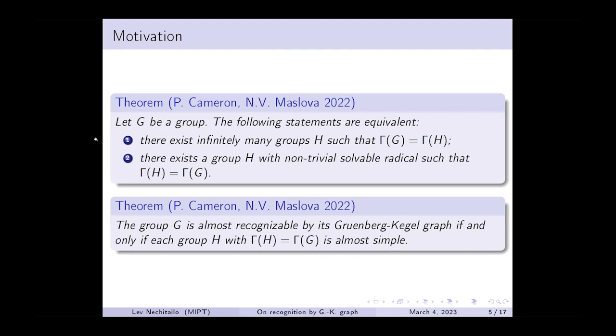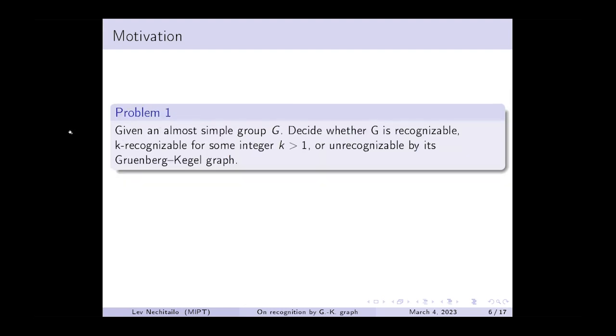We can interpret this result in the following way: if some group is almost recognizable, then it is necessarily almost simple. So the opposite question naturally arises: given an almost simple group G, decide whether G is recognizable, k-recognizable for some k, or unrecognizable by its Gruenberg-Kegel graph. A lot of work is being done on this issue.